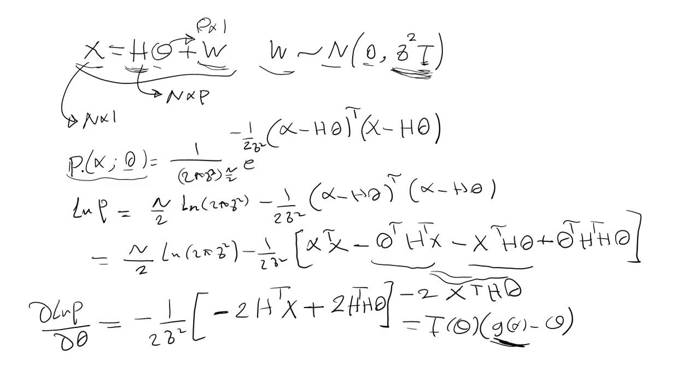First of all we form the probability density function of observation. Because the noise vector is Gaussian we can easily form the probability density function, and then taking logarithm we will have this one. Now we can simplify this expression.